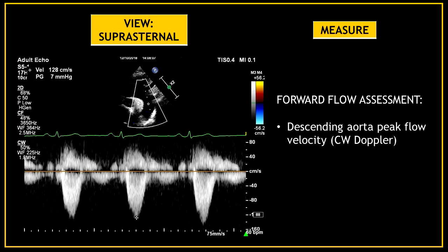Now perform a forward flow assessment. Use continuous wave Doppler on the descending aorta and measure the peak flow velocity.